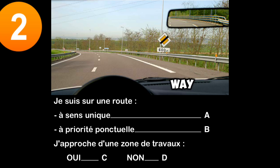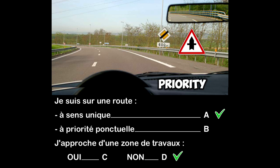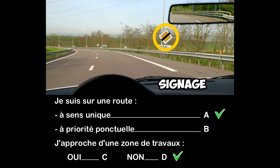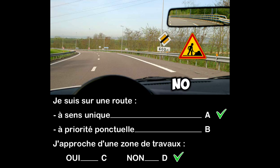Question two: I am on a one-way road — a) with punctual priority, b) I am approaching a work area, yes or no? A punctual priority of passage would be announced by a triangular sign, which is not encountered on this type of roadway. Here the signage indicates that the road will lose its priority at 600 meters. The continuous bank line on the left confirms I am on a one-way road. No signal here announces the approach of a work area.